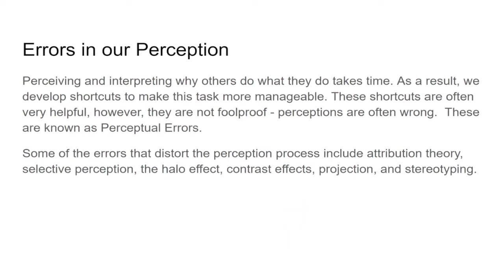Let's put this in an organizational context. Let's assume you're the boss and you want to evaluate an employee — you've got a subordinate you're evaluating to see how well they're doing on a job. Or you're the boss hiring someone, about to do an interview and creating some perceptions of that individual. Some of those perceptions might be right, some might be wrong. What are some of the things that can cause you to go wrong in that?